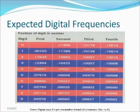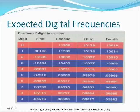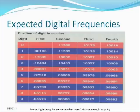Nigrini calculated the expected digital frequencies using the Binford's Law formula. This table shows the probability of obtaining digits 0 through 9 in the first four positions of a number. In the first column, there is a 30.103% chance that 1 appears in the first digit, a 17.609% chance that 2 appears in the first digit, a 12.494% chance that 3 appears in the first digit, and so on. The probability that the first digit is either a 1, 2, or 3 is 60.2%. Lower numbers appear more frequently in the first digit than higher numbers, meaning there is a large bias in favor of low digits in the first position.